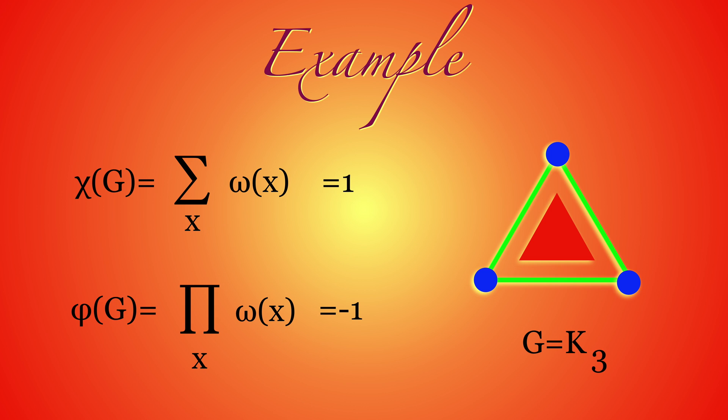While the Euler characteristic is one for any simplex, or more generally for any contractible graph, the Fermi characteristic is one only for the one-point graph. For all other complete graphs, it is minus one.